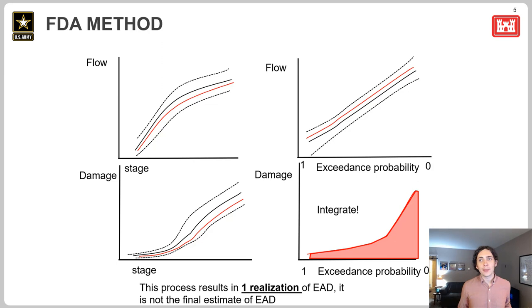FDA is going to do this over and over and over again. We're going to do a ton of iterations, that way we can get uncertainty about that expected annual damages number.